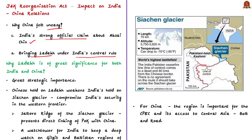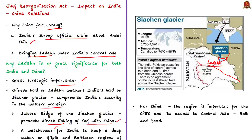Why is Ladakh of great significance for both India and China? For India, Chinese aggression close to eastern Ladakh could weaken its hold over Siachen Glacier. If the hold on Siachen is weakened, it might compromise India's security on the western frontier because of the close relationship between Pakistan and China. The Siachen Glacier demarcates Central Asia from the Indian subcontinent and separates Pakistan from China in the region, as seen in the map. The saltoro ridge of the Siachen Glacier serves as a divide that prevents the direct linking of Pakistan-occupied Kashmir with China, stopping them from developing geographical military linkages. Siachen also serves as a watchtower for India to keep a deep watch on Gilgit and Baltistan regions of Pakistan.